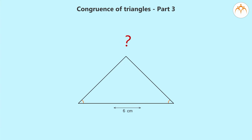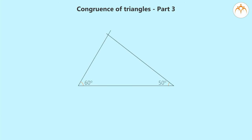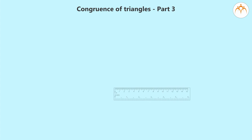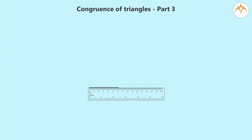To answer this question, we need to think: if two angles and a pair of sides between them in a given triangle are known, how many triangles can we draw and will they be congruent? Suppose we have to draw a triangle whose two angles measure 60 degrees and 50 degrees, and the length of the side between these angles is 6 centimeters. Let us draw a line segment of length 6 centimeters.